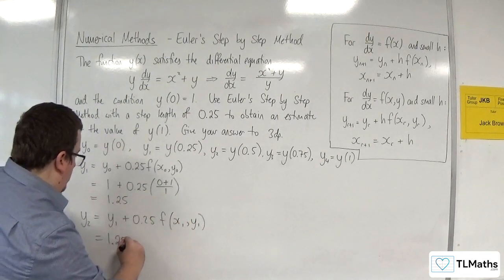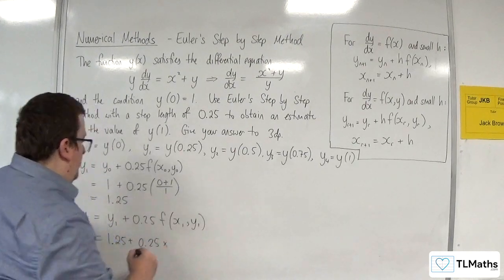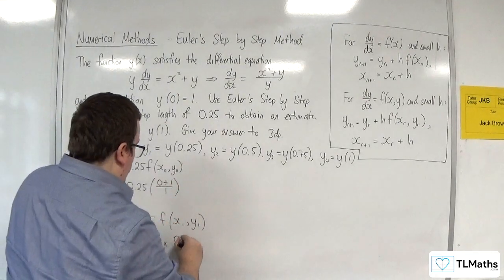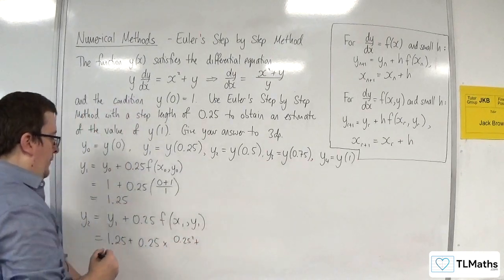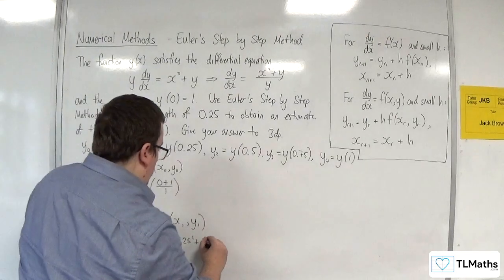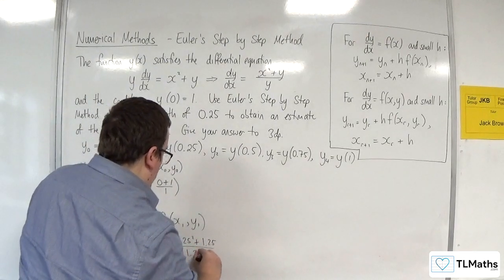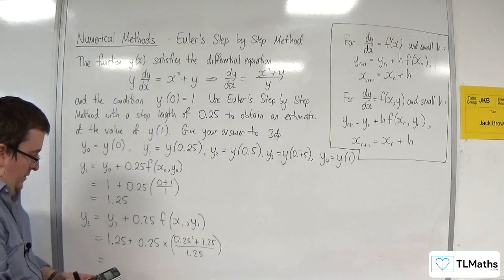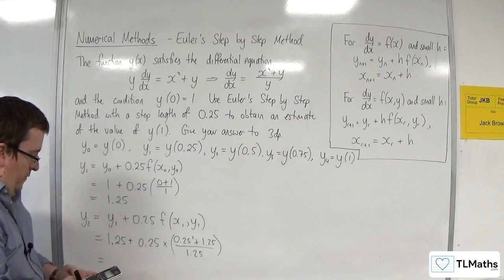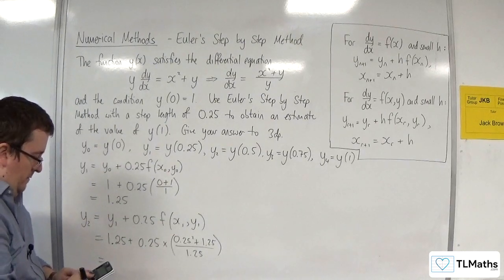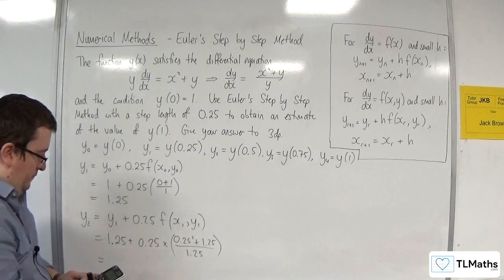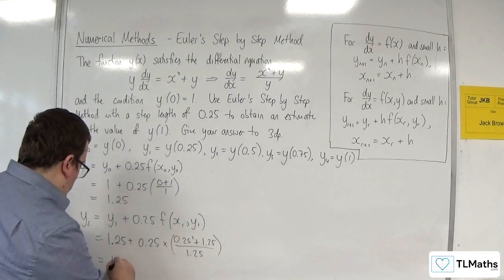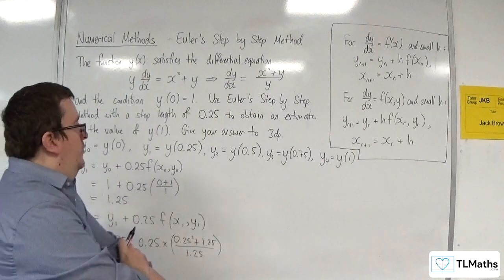So 1.25 plus 0.25 times by, now x₁, y₁. Now x₁ is the 0.25, so we're going to have 0.25 squared plus y₁, which is the 1.25, over the y₁. So 1.25 plus 0.25 times 0.25 squared plus 1.25 over 1.25. And that gets me 121 over 80, which is 1.5125. So I've now got my y₂.